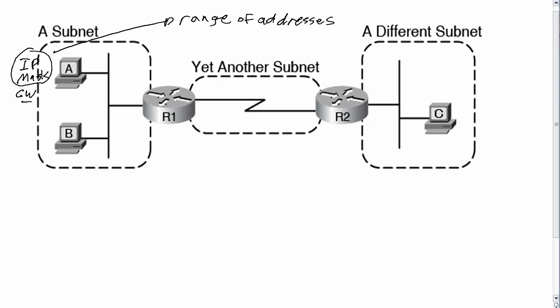The host will either say the destination IP address is in the same subnet — and if so, the host can send the packet locally, meaning without using the default gateway — but if the destination is in a different subnet, then use the gateway and let the gateway figure out how to route the packet. That's the basic logic.